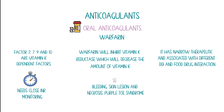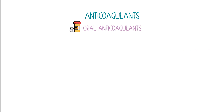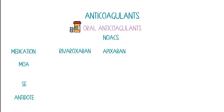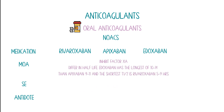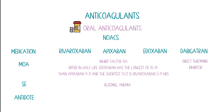Then we have the NOACs, like rivaroxaban, apixaban, and edoxaban — all three are factor Xa inhibitors. They differ in half-life: edoxaban has the longest at 10–14 hours, then apixaban at 9–11 hours, and rivaroxaban at 5–9 hours. There is no available antidote for these three agents and side effects include bleeding and anemia. Then we have dabigatran, which is a direct thrombin inhibitor. The antidote available is idarucizumab. Side effects include dyspepsia, gastritis-like symptoms, and bleeding.